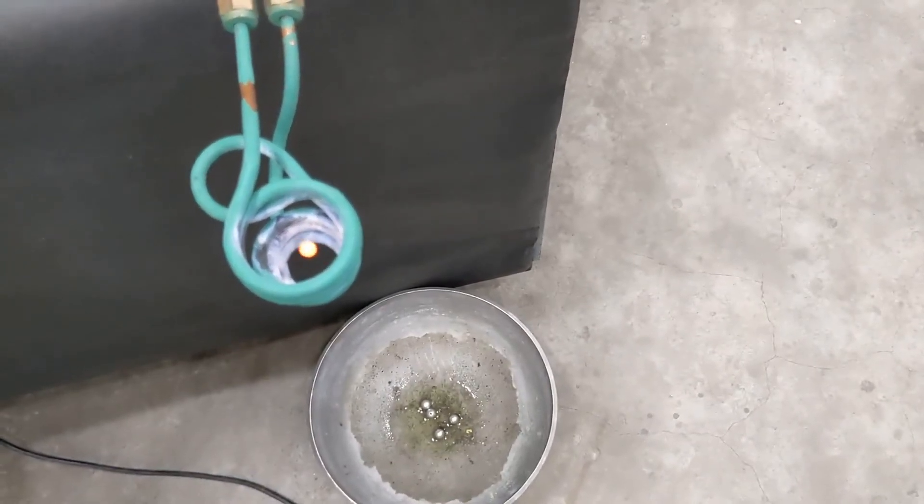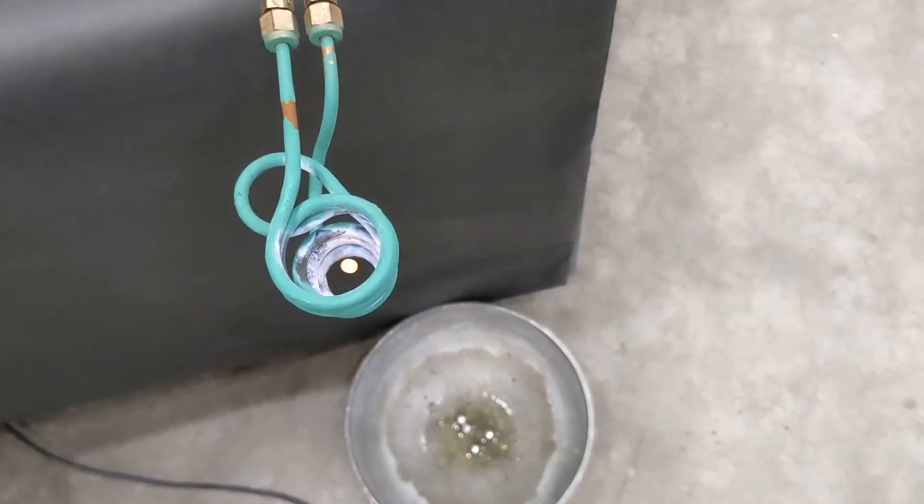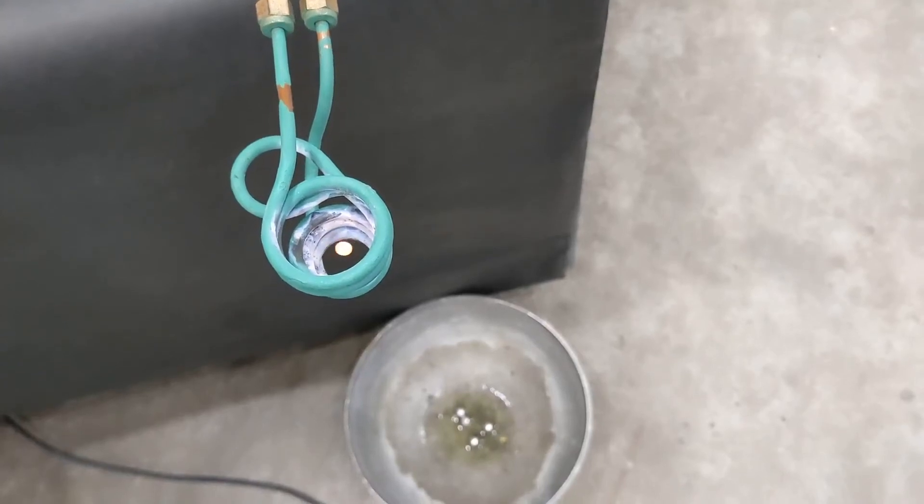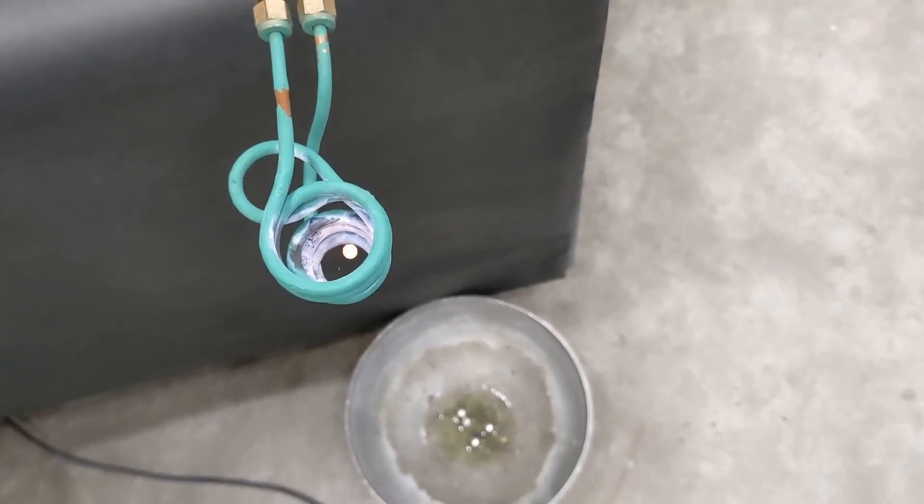A coil under the surface of the stovetop induces a current in the bottom of the pan. The resistance of that material on the pan creates heat and cooks your food.